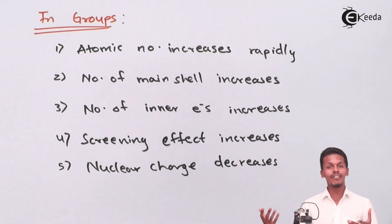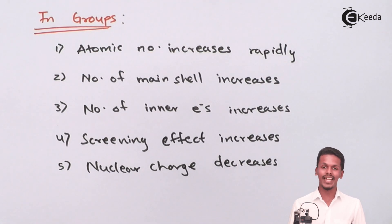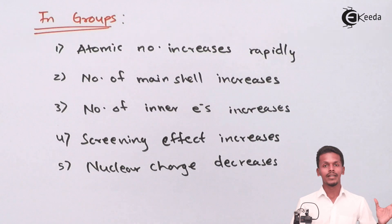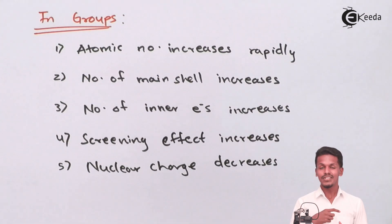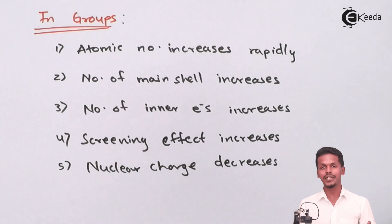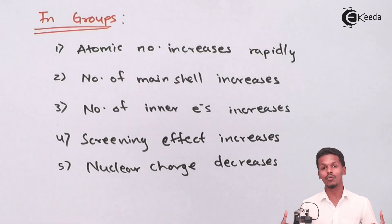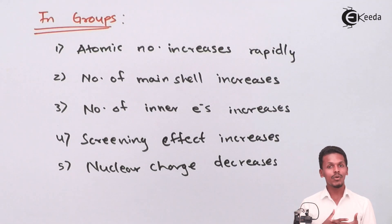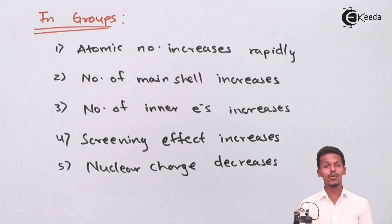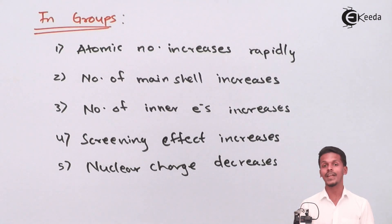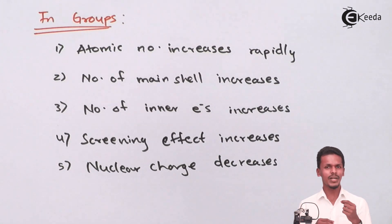It's not only one factor — there are various factors that affect atomic size. The number of main shells remains constant as we move left to right along a period, but increases as we move down a group. When concerned with screening effect, we observe that inner electrons also go on increasing down a group, resulting in more screening effect, decreased nuclear charge, and hence increased atomic size.